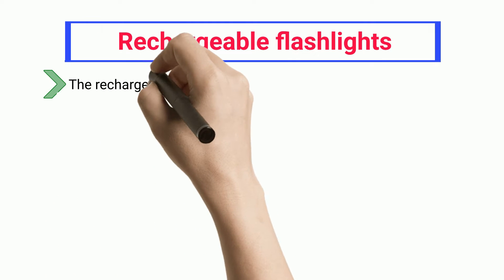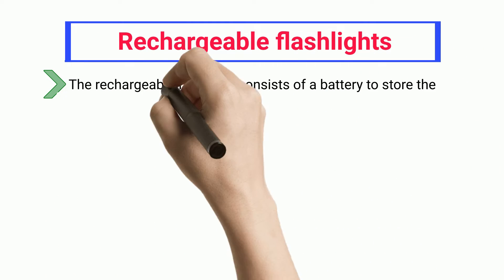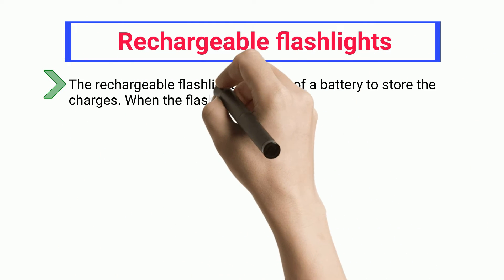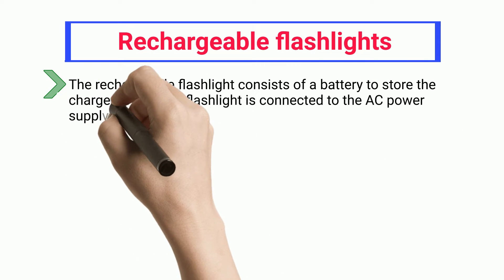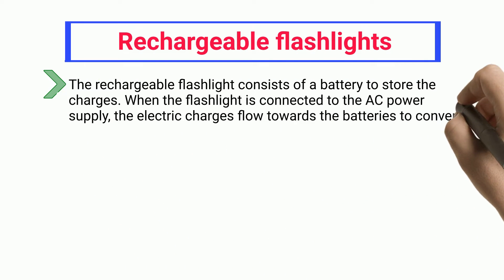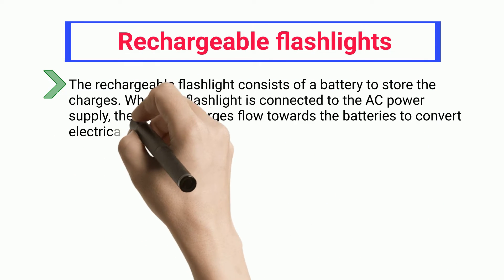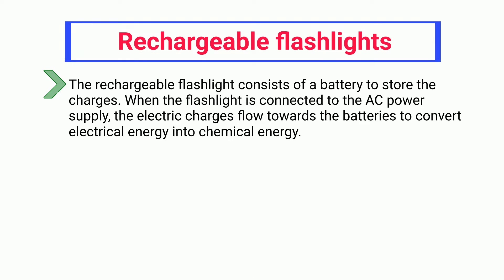Rechargeable Flashlights. The rechargeable flashlight consists of a battery to store the charges. When the flashlight is connected to the AC power supply, the electric charges flow towards the batteries to convert electrical energy into chemical energy.